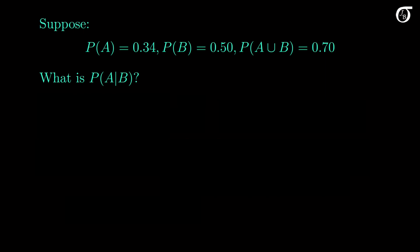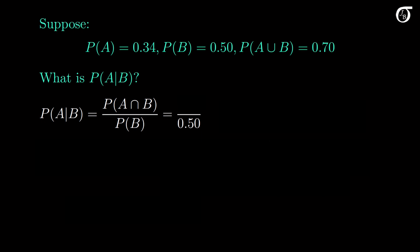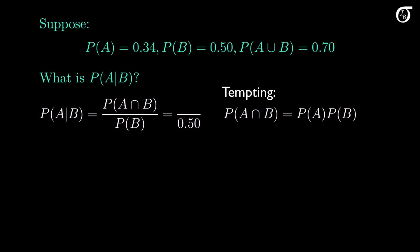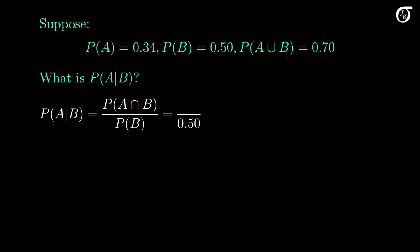We need to find the probability of A given B, which is equal to the probability of the intersection of A and B over the probability of event B. The denominator is easy to find — it's given in the question — but it's a little harder to find the numerator. Some people find it tempting to say that the probability of A intersect B equals the probability of A times the probability of B, but that's only true if A and B are independent, and there is nothing in this question that indicates independence. So try not to make the mistake of simply assuming independence whenever it draws your fancy.